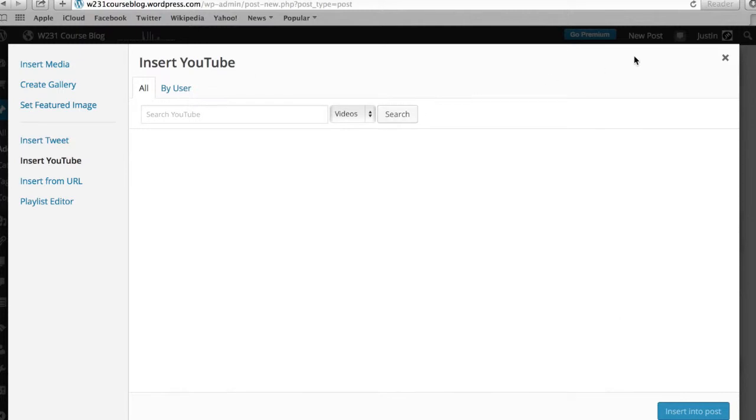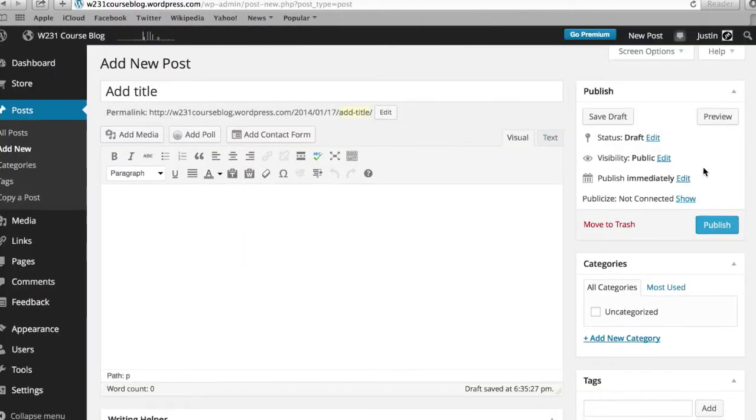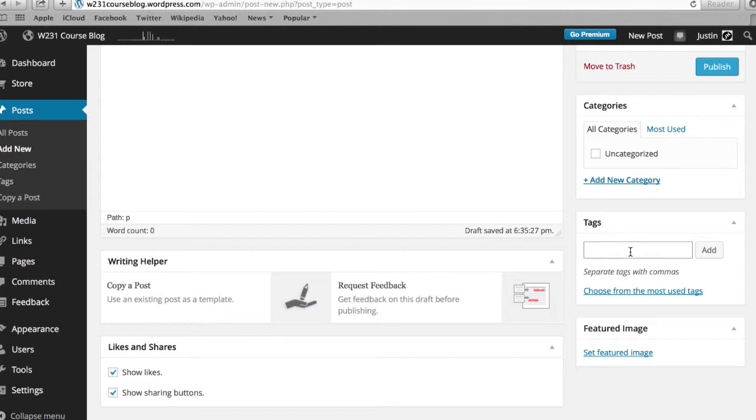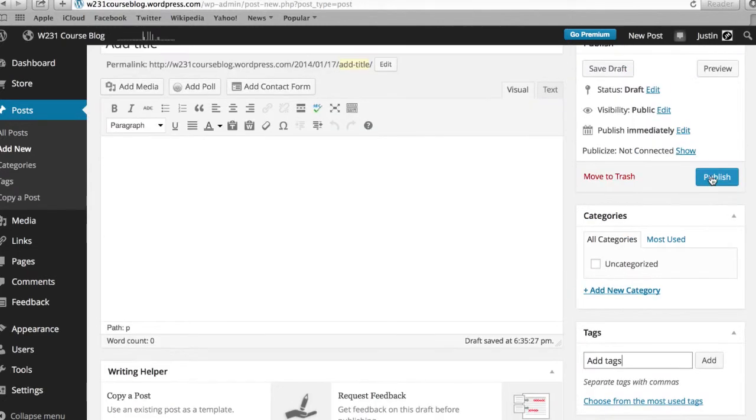So once you've got the media there, you click insert into post and it should be pretty much ready to go, except you need to add tags. The requirement is to add five tags, keywords, ways of focusing your post, and then click publish, and that's it. It should go live on the site.